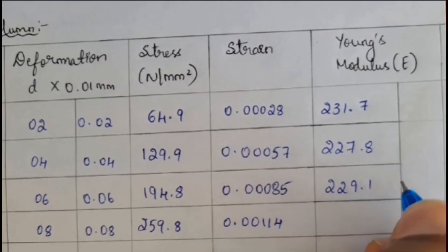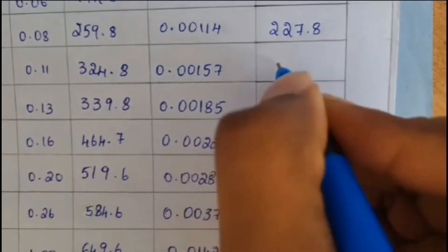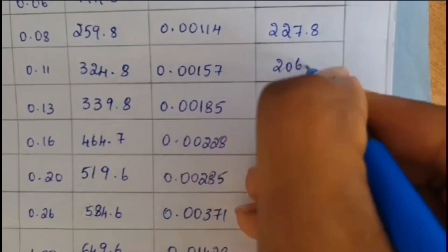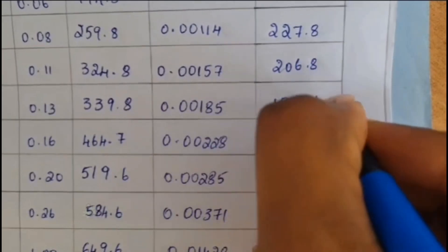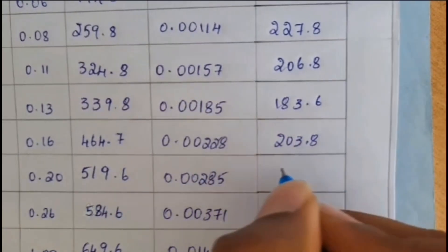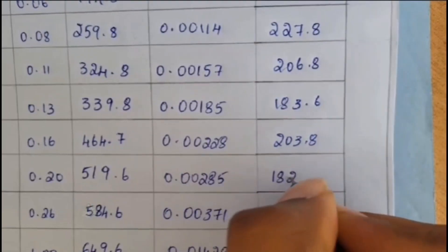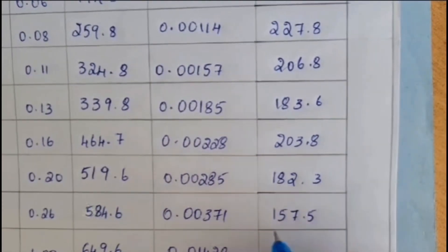For second one we will be getting 227.8. For third one we will be getting 229.1. For fourth one I will be getting 227.8. Same thing for fifth one also I will be getting 206.8. For sixth one 183.6. For seventh one 203.8. For eighth one 182.3. For ninth one 157.5. For tenth one 45.4.